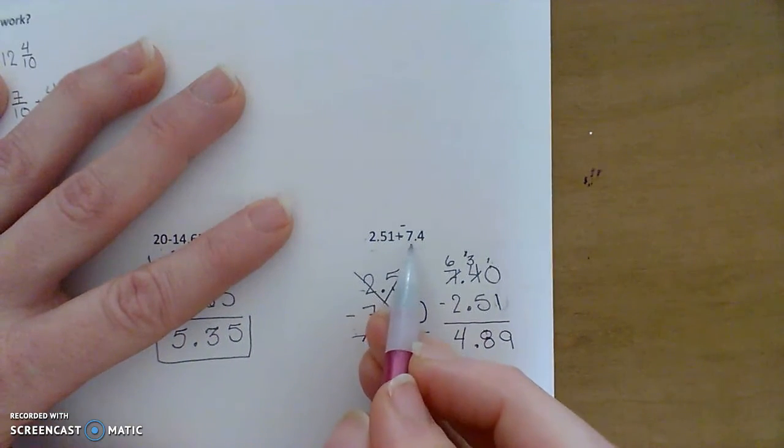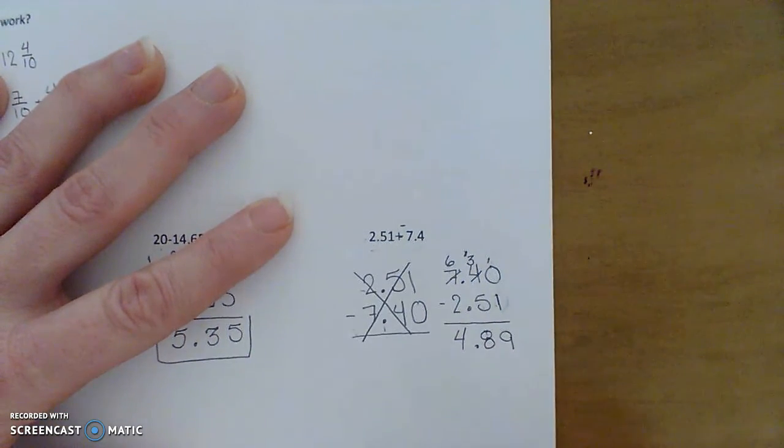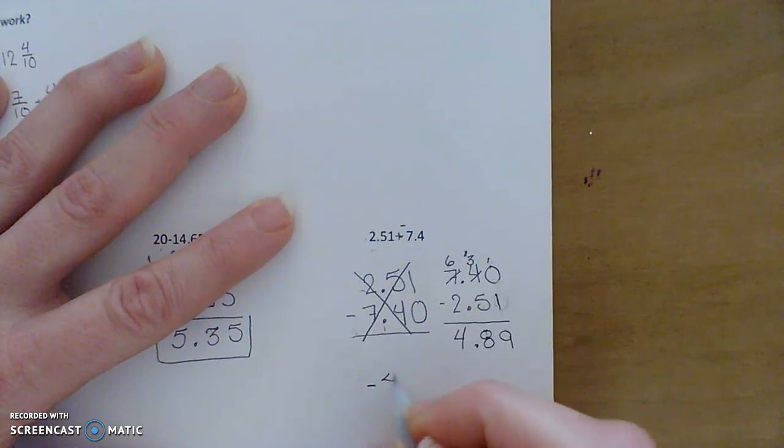But notice, again, I have more negatives than I have positives. So my results should be negative. So my answer here is negative four and eighty nine hundredths.